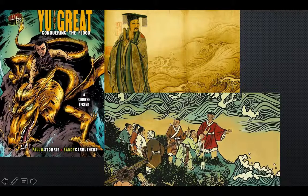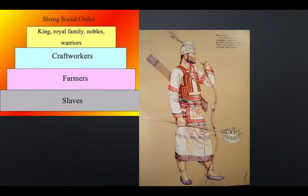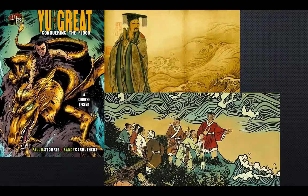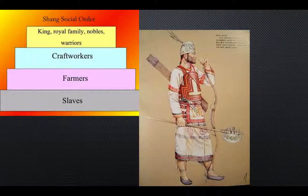He was one of the first Xia rulers — the Xia dynasty. But the first dynasty that we know definitely existed was the Shang dynasty, and they built their civilization along the Huanghe.